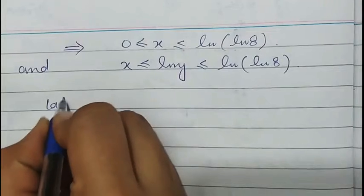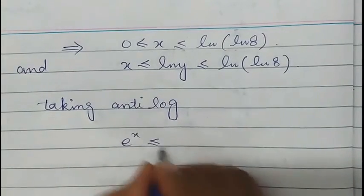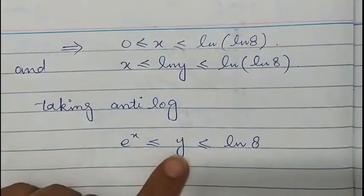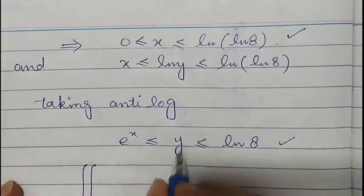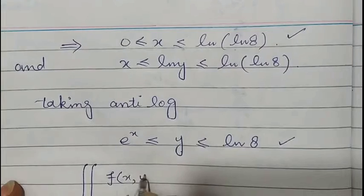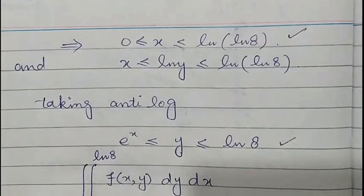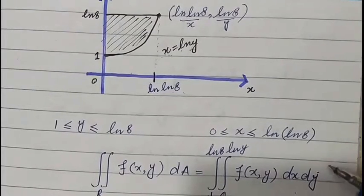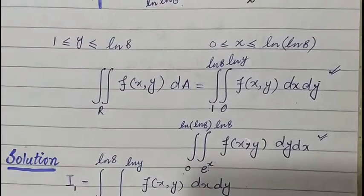Taking the anti-log: log and anti-log cancel each other, giving e^x ≤ y and y ≤ log 8. So y limits are from e^x to log 8. For this x and y condition, since y is now a curve function, we take y inside and x outside. The limits of y are from e^x to log 8, and x limits are from 0 to log(log 8). This confirms both forms of the integral are interchangeable.